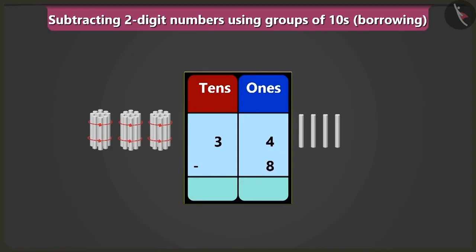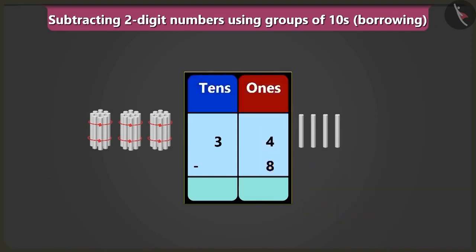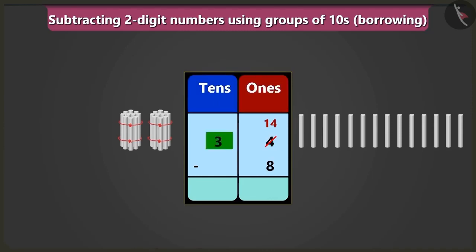But here 4 is smaller than 8 in the box of ones, so how will we subtract 8 from 4? We cannot subtract a big number from a small number. So, we will borrow one 10 from the number in the box of tens. The number in the place of ones can borrow one 10 from its neighbour. Yes, absolutely right, Bubbly. Now we will write one 10 and four 1s — 14 — in the box of ones, and two 10s instead of three 10s in the box of tens.